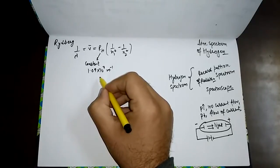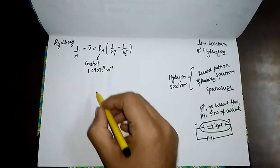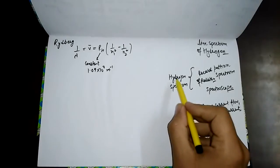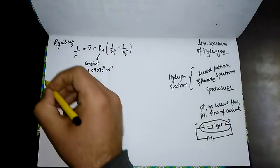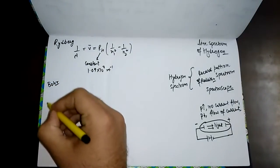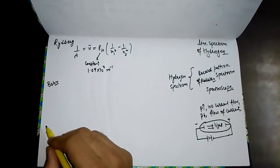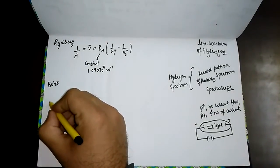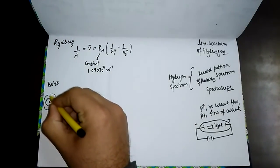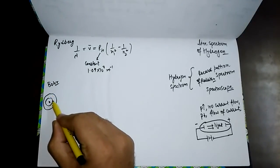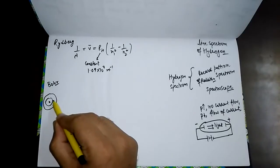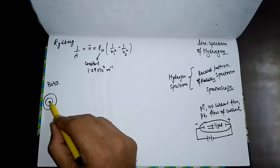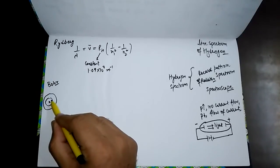This whole hydrogen spectrum is explained by the scientist Bohr. He explained that atoms have a number of shells — K, L, M, N — and these shells have electrons. These shells are also known as energy levels.